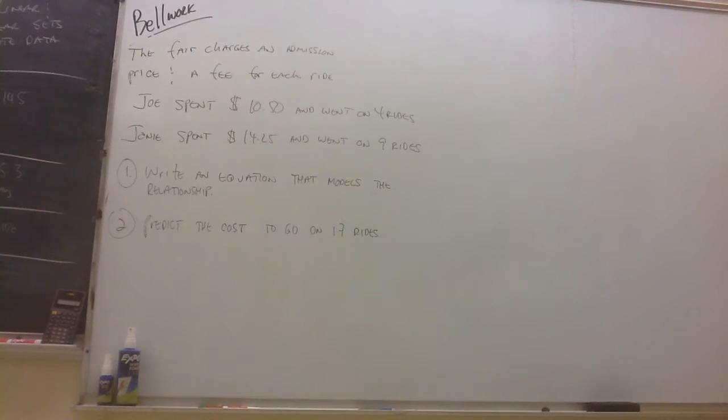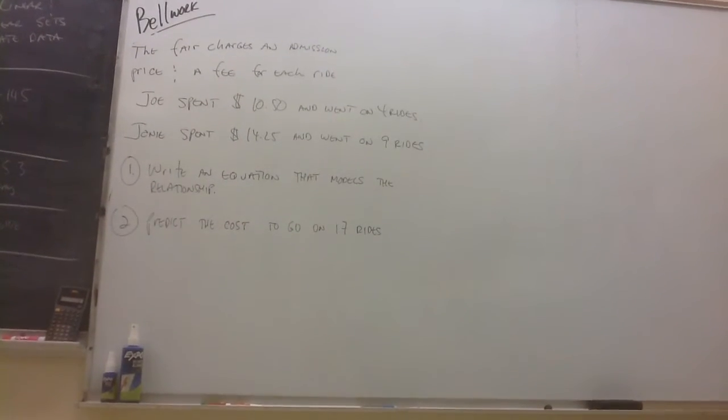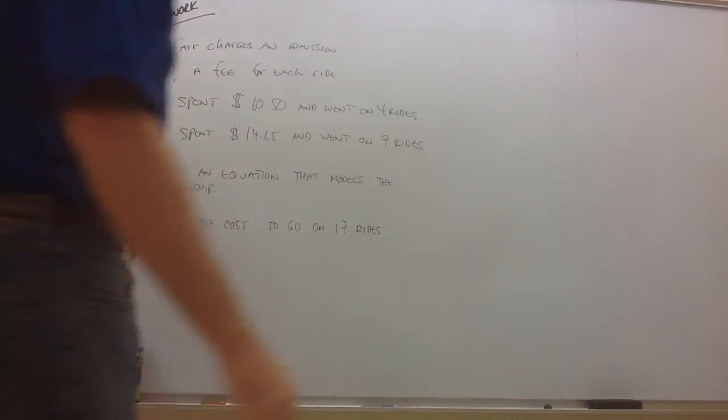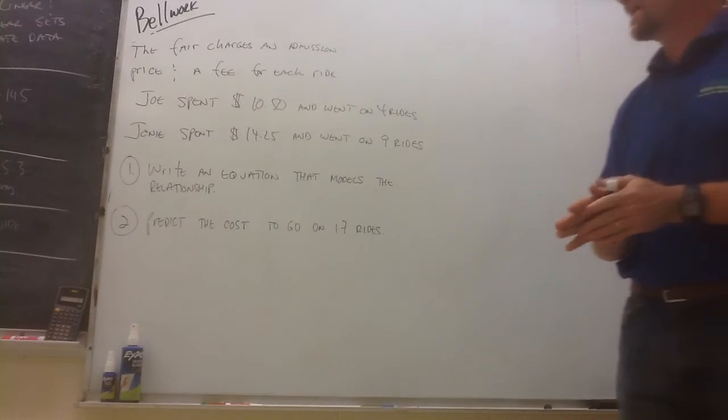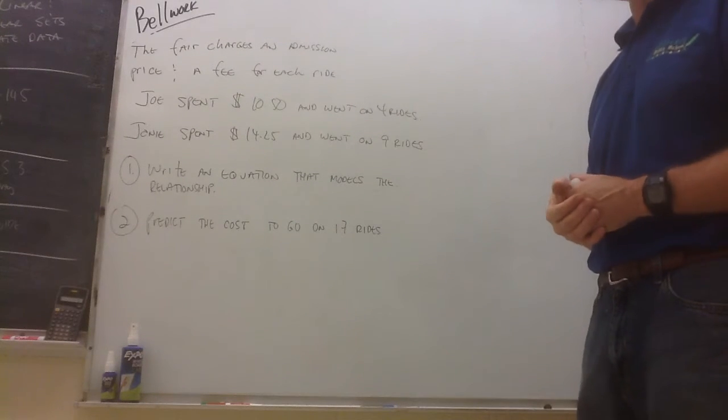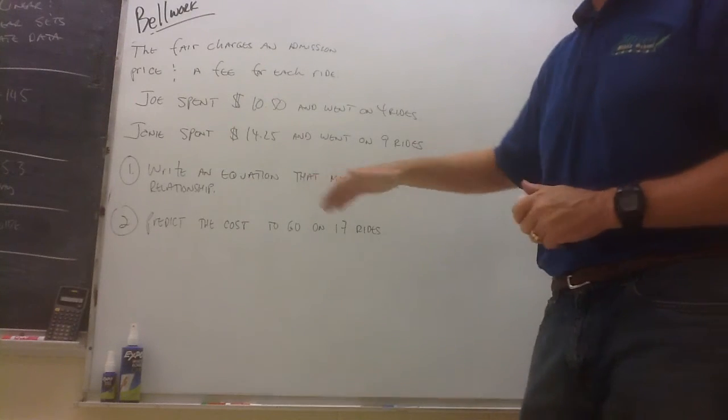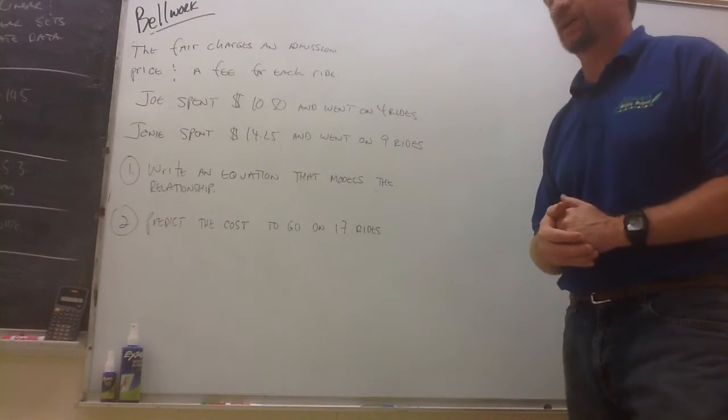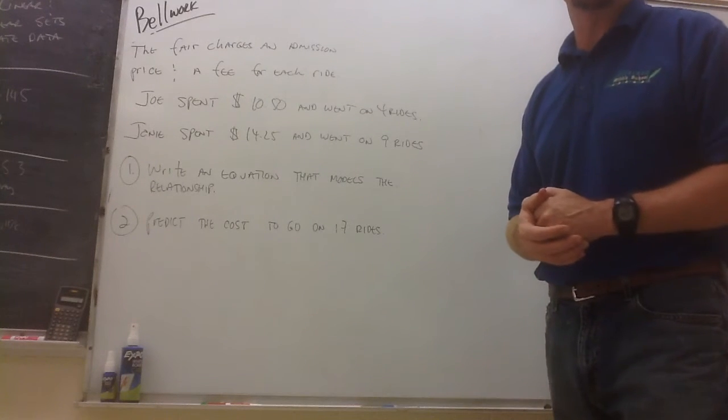Okay, if you take a look at the bellwork problem on the board today, it tells us that the fair charges an admission price and a fee for each ride. Joe spent $10.50 and went on four rides. Janie spent $14.25 and went on nine rides. And I asked you to write an equation that models the relationship and then use that equation to predict the cost to go on 17 rides.